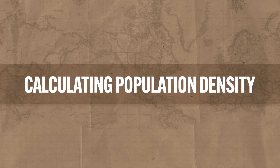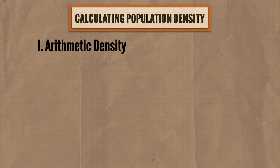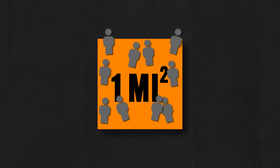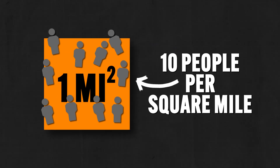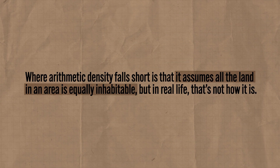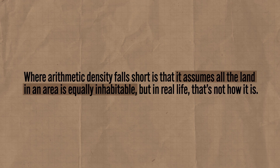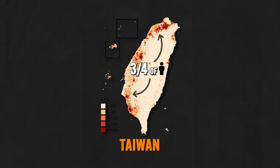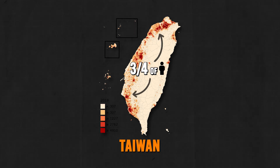There are three ways to calculate population density. First is arithmetic density, which is the total population divided by the total land area. Ten people divided by one square mile equals ten people per square mile. Arithmetic density is useful in a lot of ways, but it falls short because it assumes all the land in an area is equally inhabitable. For example, Taiwan has one of the highest population densities in the world, but three-quarters of its people live on one-third of its land area. So arithmetic density doesn't account for this and might lead you to assume the population is evenly distributed across Taiwan, but it is not.